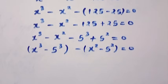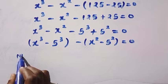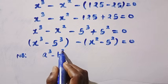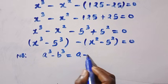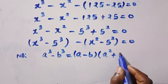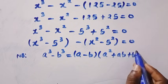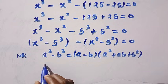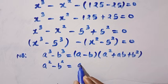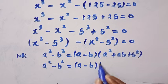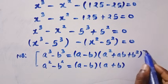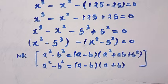We note two important formulas. First: a cubed minus b cubed equals a minus b, multiplied by a squared plus ab plus b squared. Second: a squared minus b squared equals a minus b, multiplied by a plus b. These are the two formulas we are going to use.